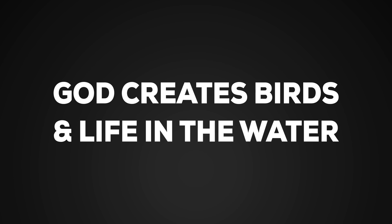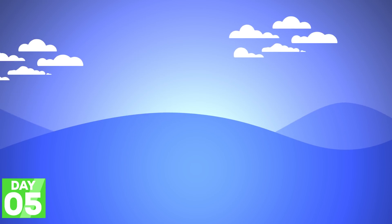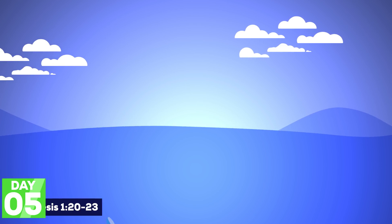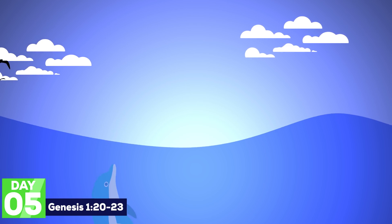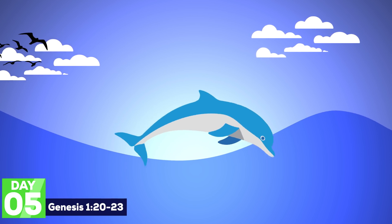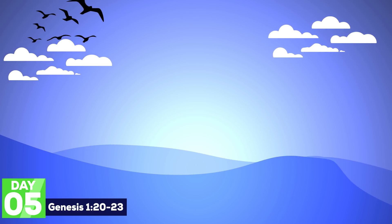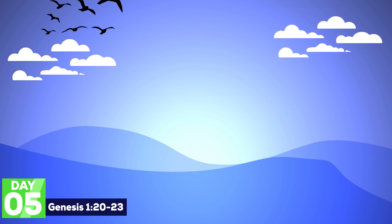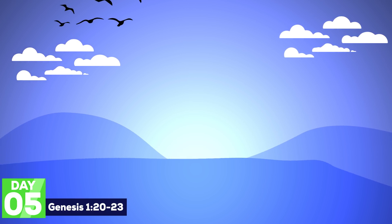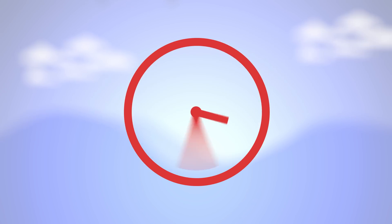God creates all life that lives in the water. God also makes the birds. All of these creatures were made with the ability to perpetuate their species by reproduction. The creatures made on day five are the first creatures blessed by God. God declares this work good, and it occurs in one day.